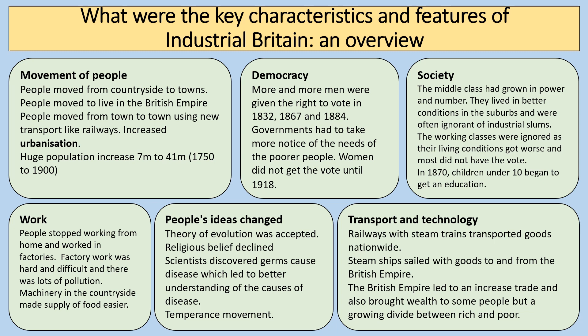There is more democracy during this time — more and more men were given the right to vote in 1832, 1867 and 1884 — and this is one of the reasons why we see some changes to improve the living conditions of poorer people. Governments had to take more notice of the needs of the poor, though women did not get the vote until 1918. The middle class grew in power and number, living in better conditions in the suburbs and often ignorant of industrial slums, while the working classes tended to be ignored as their living conditions got worse.